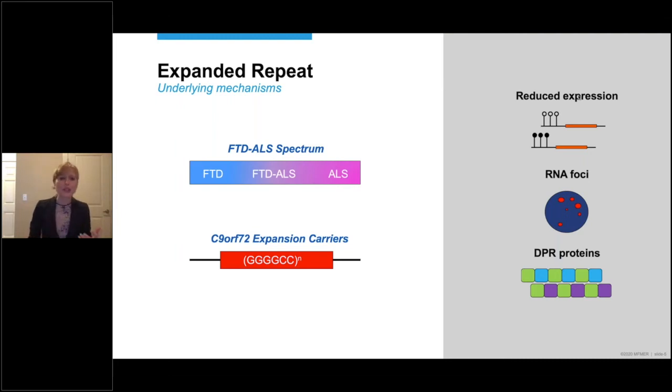It also causes the formation of RNA foci that contain flawed RNAs, hampering the function of RNA binding proteins, and the formation of dipeptide repeat proteins, DPR proteins, apparently translated from the expansion due to repeat-associated non-ATG translation. And the most abundant dipeptide repeat proteins are polyGP and polyGA.